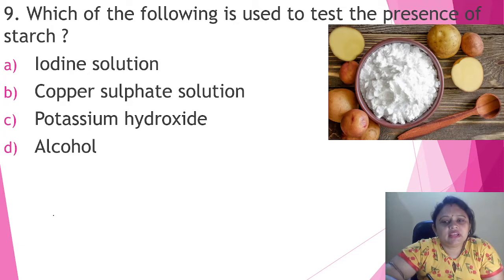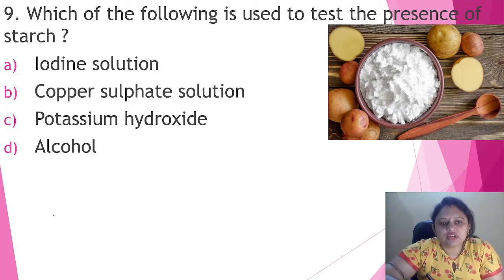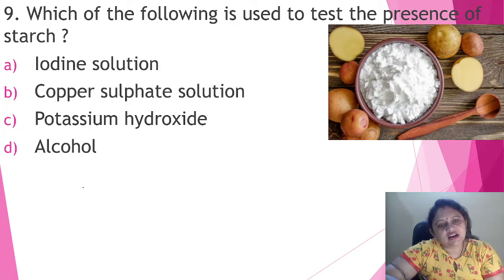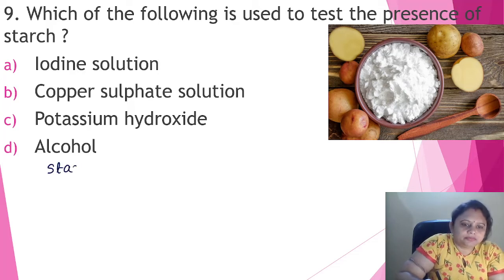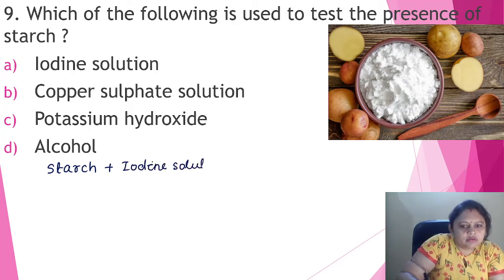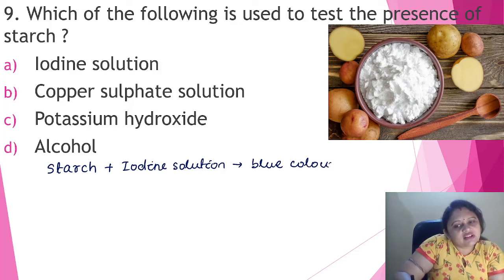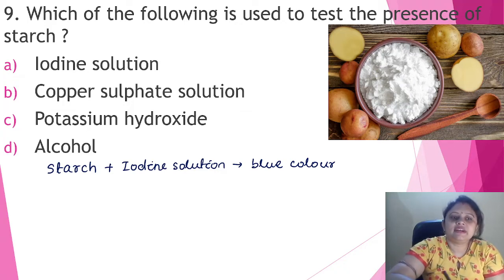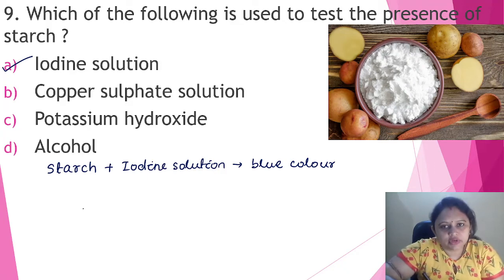Which of the following is used to test the presence of starch? Options are: A. iodine solution, B. copper sulfate solution, C. potassium hydroxide, D. alcohol. Starch is identified by iodine solution — when starch comes in contact with iodine solution, it turns blue or blue-black in color. So the correct answer is option A, that is iodine solution.